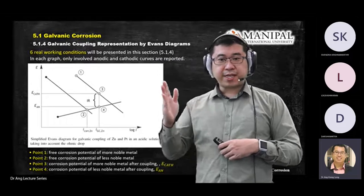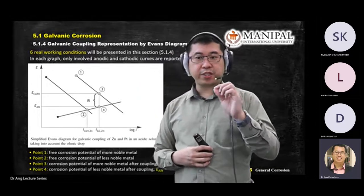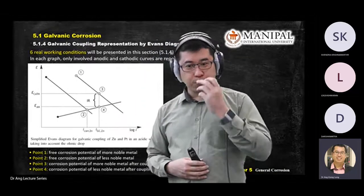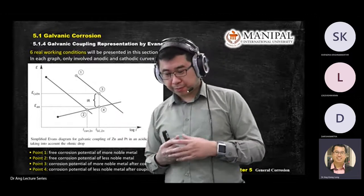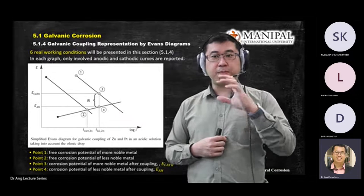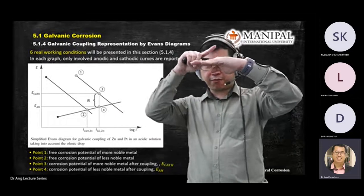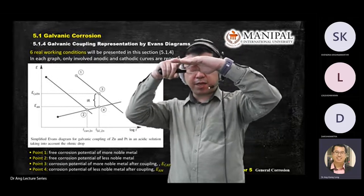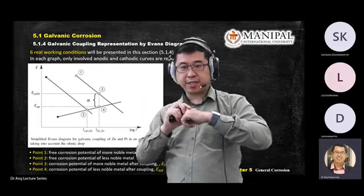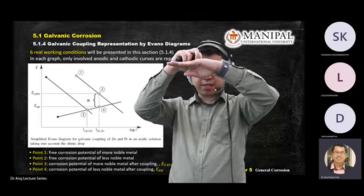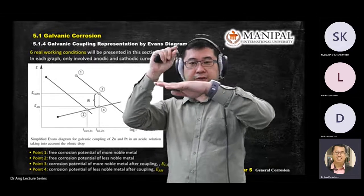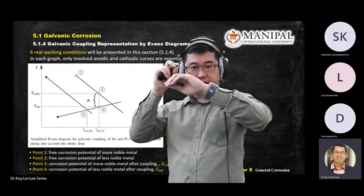H⁺ and OH⁻ are both present when you have a solution with water. When you see the keyword 'acidic solution,' it means more H⁺. All the H⁺ will be attracted to the cathode — the higher nobility metal — to become hydrogen gas. H⁺ combines with the negative (electron) charge to produce hydrogen gas. That is why you see hydrogen gas generated from the surface surrounding the cathode.